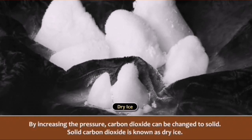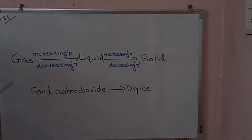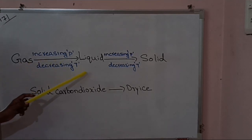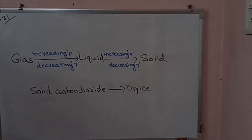Solid carbon dioxide is known as dry ice. It is used to make smoke effects in stage programs. By increasing the pressure and decreasing the temperature, air can also be liquefied. So, to convert a gas to liquid, we increase the pressure and decrease the temperature.